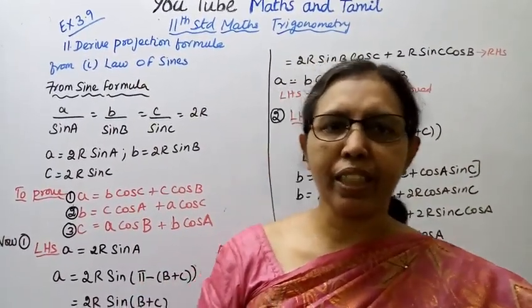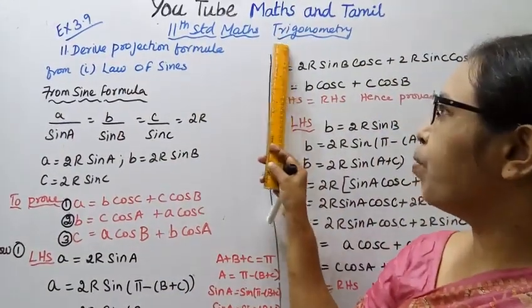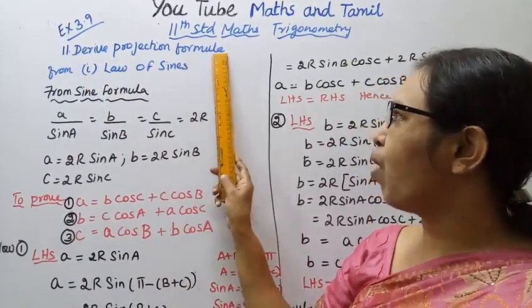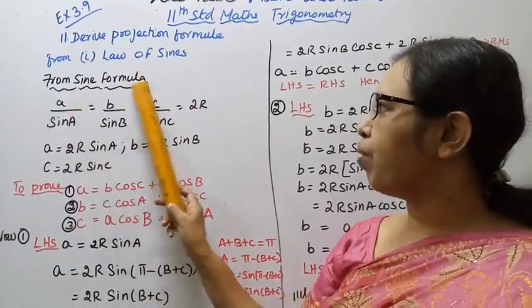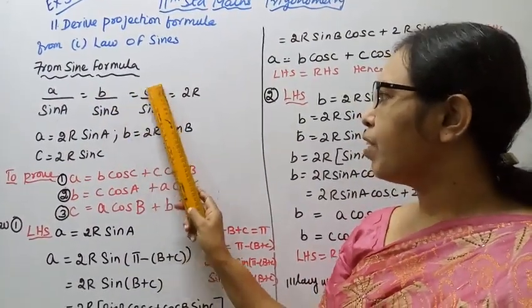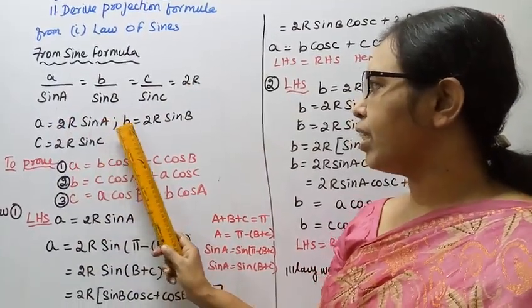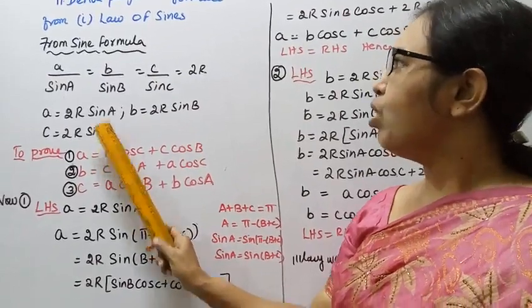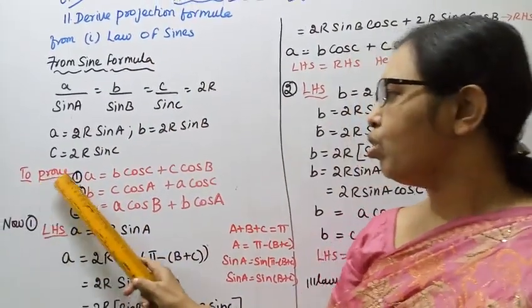Hello students, welcome to Max and Tamil channel. 11th standard max trigonometry, Exercise 3.9. We will derive the projection formula from the law of sines. The sine formula states: a by sin A = b by sin B = c by sin C = 2R. So a = 2R sin A, b = 2R sin B, c = 2R sin C.